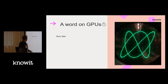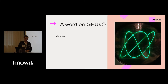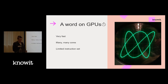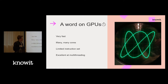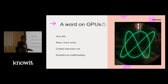GPUs are very fast, have very low latency because they need to render things in real time, and they have many many cores, which means we can process many things simultaneously. They have a limited instruction set, but that's actually useful — because of it we can make very many of them and they can be fast. This makes them excellent at multi-threading. They're not only good at making fancy games — they can be good at anything as long as you write the right instructions.